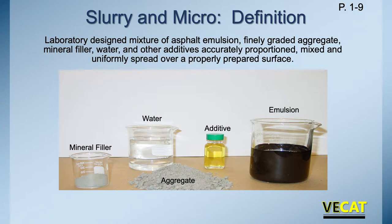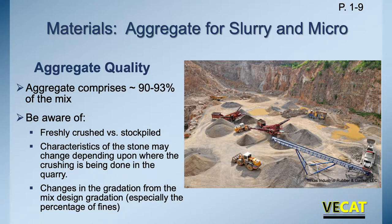Slurry and micro is defined as a laboratory design mixture of asphalt emulsion, finely graded aggregate, mineral filler, water, and occasionally an additive to help slow the breaking process in the emulsion. Aggregate comprises 90-93% of the mix. Some things to look for: freshly crushed stone versus stockpiled, because the characteristics of the stone may change depending on when they crushed it last. Where they crush it in the quarry also affects it. Changes in the gradation from the mix design, especially the percentage of fines, can make a major impact on the finished slurry and micro product.